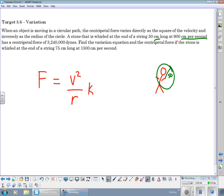So, we have this centripetal force of 3,240,000 dynes. And that's going to equal the velocity squared divided by the radius.